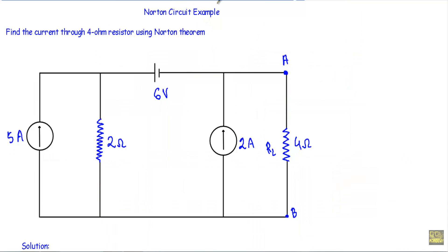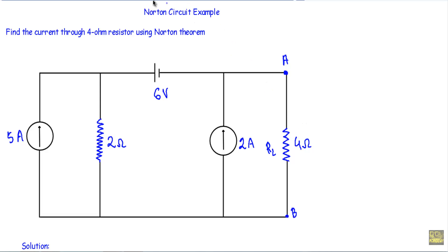In this video I will show you an example of Norton theorem. Find the current through the 4 ohm resistor using Norton theorem. This 4 ohm resistor will be our load resistor RL, and we have to find out the current that is flowing through it.